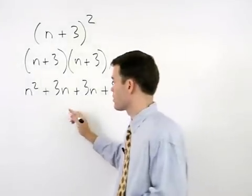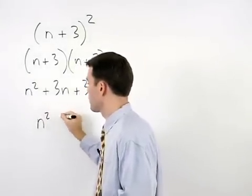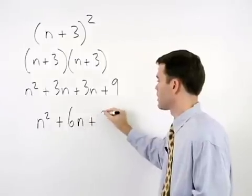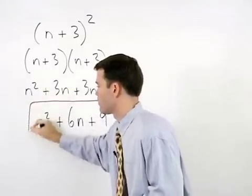Combining our middle terms, we have n squared, plus 6n, plus 9, for our final answer.